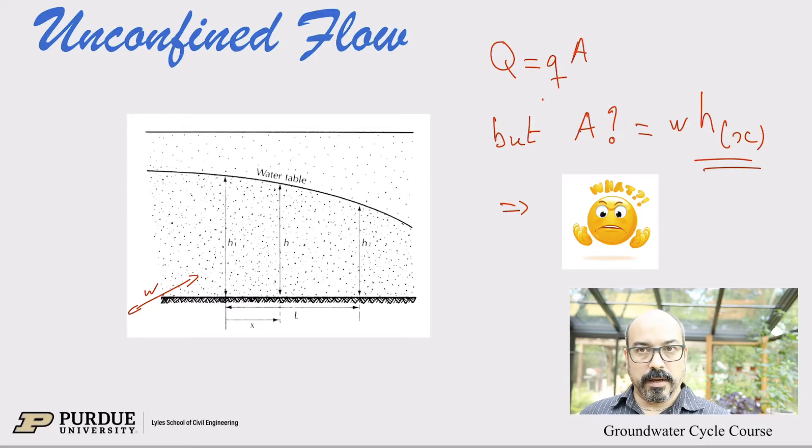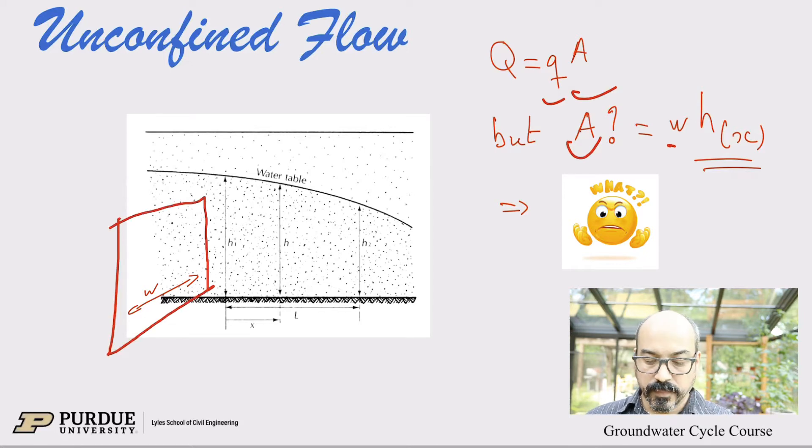Okay, so again we start with our basic definition of flow. What is discharge? It is again the Darcy flux times the area, but now the area, remember last time because B was constant for a confined aquifer, the area was not a problem. Now the area of the aquifer is the depth of the aquifer times the width. But now the depth of the aquifer is variable because it's a water table aquifer.